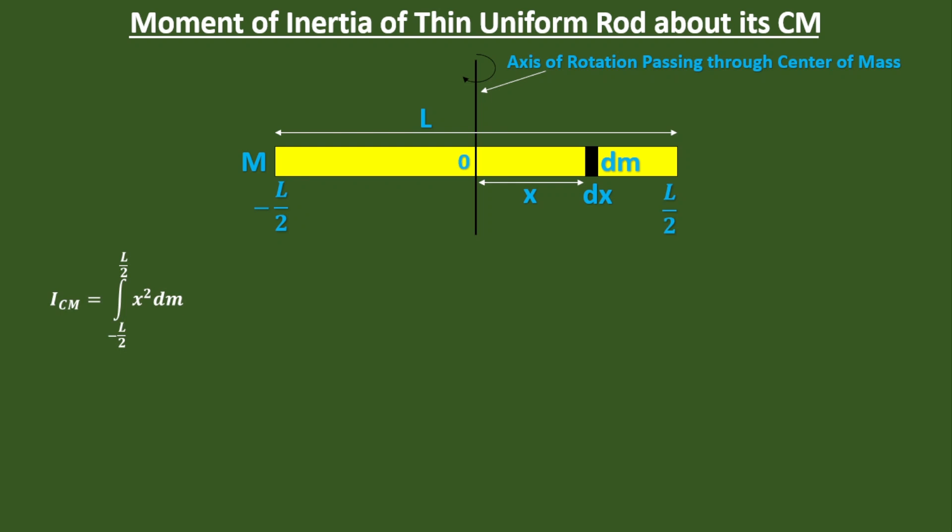From the definition of moment of inertia for the continuous body, it equals the integration from minus L by 2 to L by 2 of x squared dm. Since we have x squared as a variable, we cannot integrate it with dm, so we have to convert dm into dx.